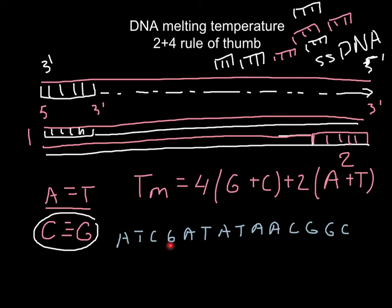We have one, two, three, four, five, six, so we have six nucleotides here. Now we have to count how many A and Ts we have, and we have one, two, three, four, five, six, seven, eight, so we have eight. Now we have to multiply 4 by 6, we have 24 here, and 2 by 8, we have 16 here. Together we have 40. So we calculated melting temperature for this particular sequence, which is 40 degrees Celsius.